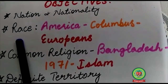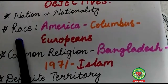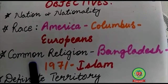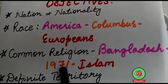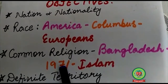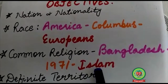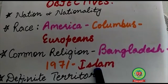No nation can claim a purity of race. Each modern nation is a mixture of races, so nation cannot be defined in terms of race. What really makes a nation is common inheritance. Nation is a population with a strong sense of unity. Common religion also does not make a nation — for example, in 1971 Bangladesh separated itself from Pakistan, despite the fact that people of both countries had Islam as a common religion. So religion is not a common factor to make a nation.